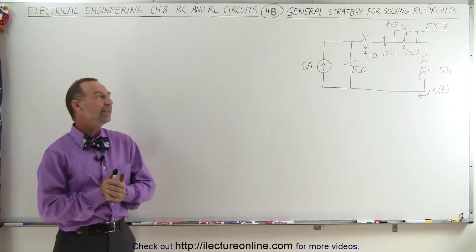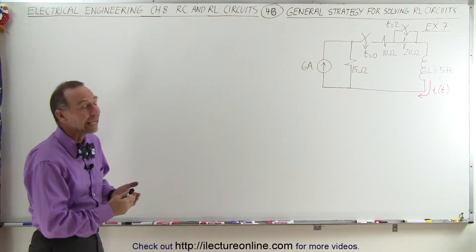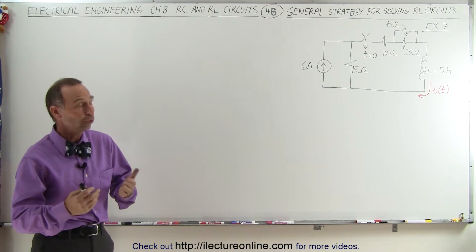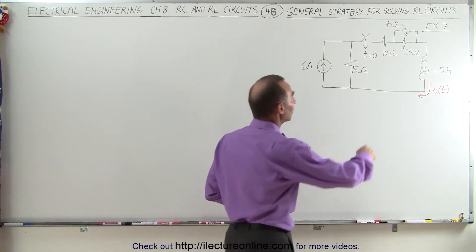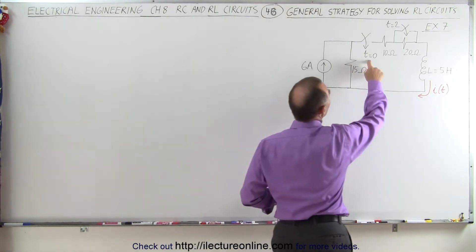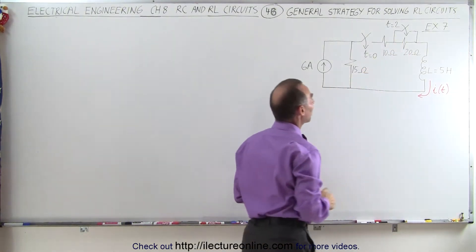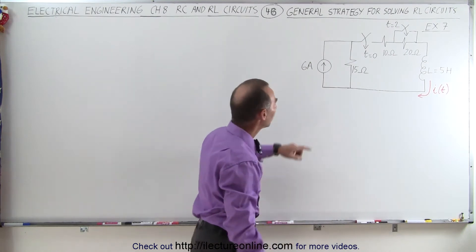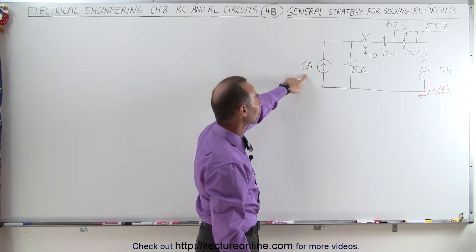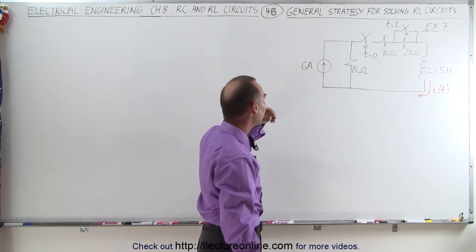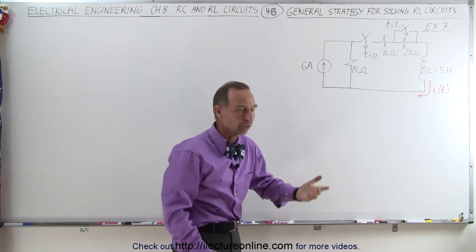Welcome to our lecture online. Here we have another example. Again, it has two switches: one that closes at time equals zero, and a second switch that closes at time equals two. We have a six-amp current source in this case, so we have a current source instead of a voltage source.